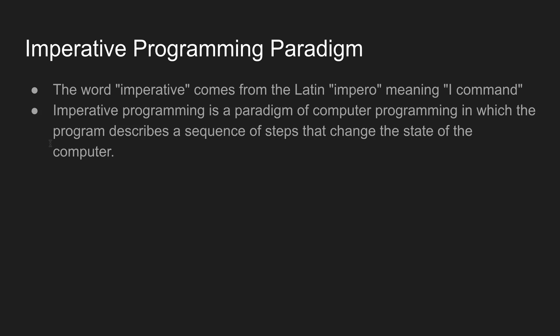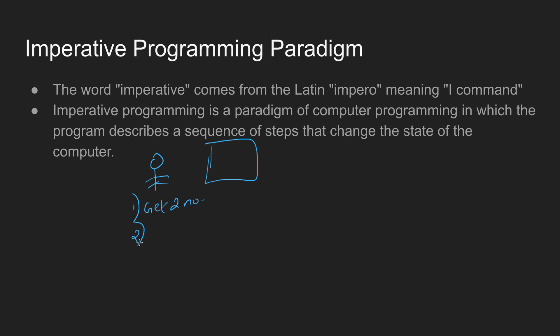The second definition: imperative programming is a paradigm of computer programming in which the program describes the sequence of steps that change the state of the computer. Consider a scenario where you want to add two numbers. The first step would be to get two numbers from the user, the second command would be to add those two numbers, and the third command would be to display the sum.